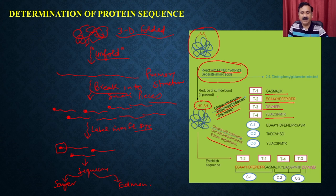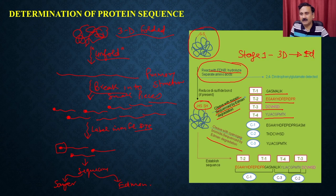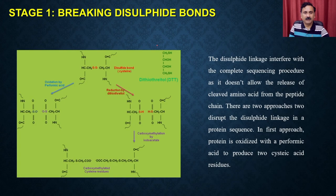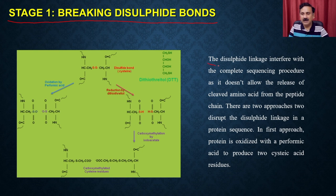Stage 1 is converting the 3D conformation into the 1D or primary structure by breaking the disulfide bonds. The disulfide linkages interfere with the complete sequencing procedure as they do not allow the release of the cleaved amino acid from the peptide chain. There are two approaches to disrupt the disulfide linkages. If you do not break the disulfide linkages, even if the amino acid is labeled and hydrolyzed, it will not be released from the main chain because it is still bound through a disulfide linkage.